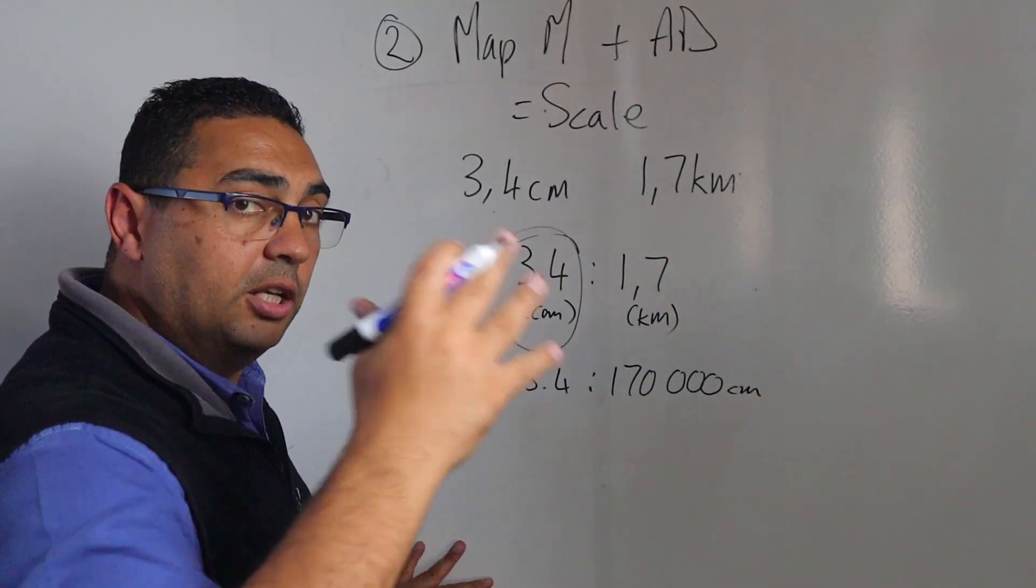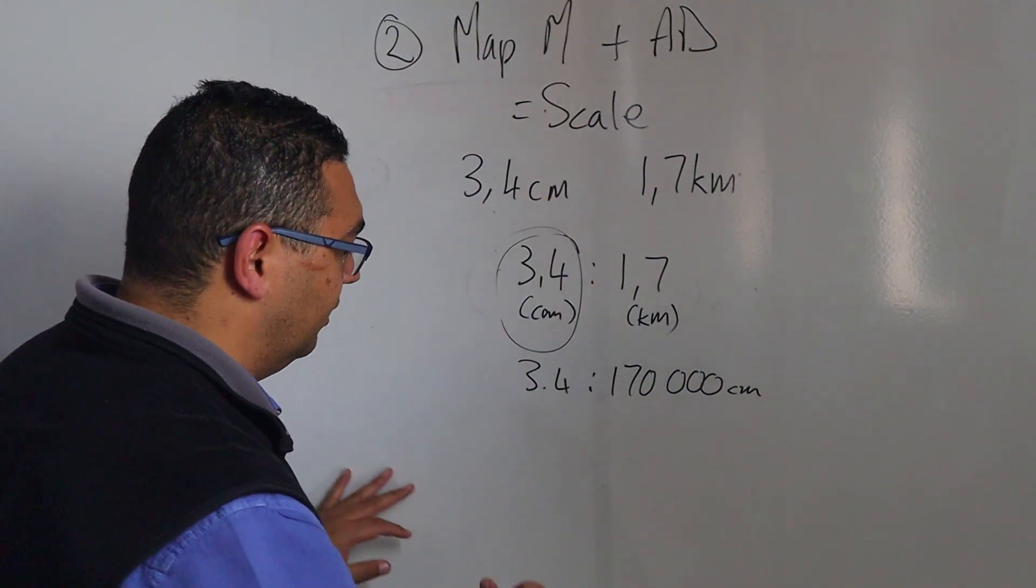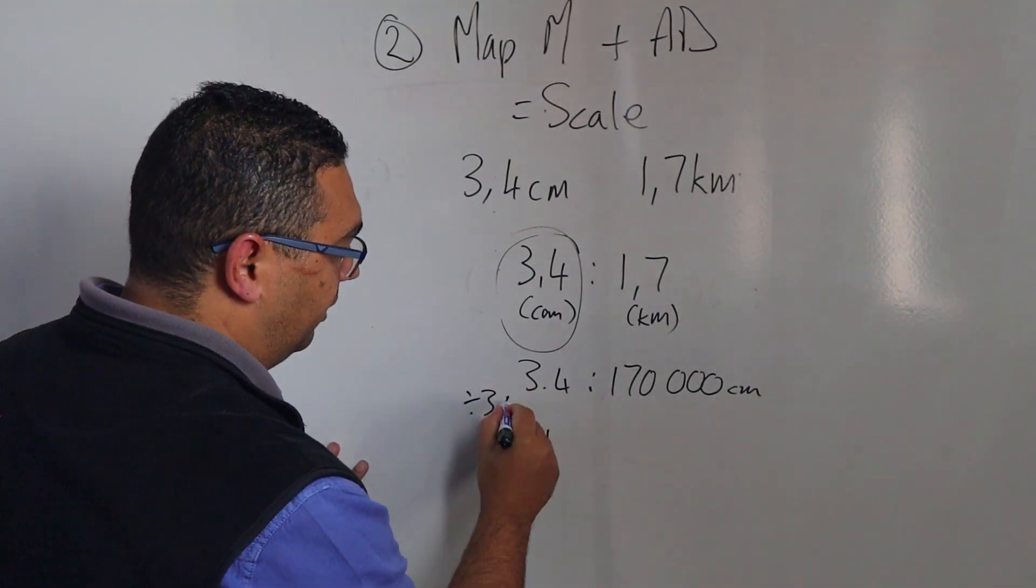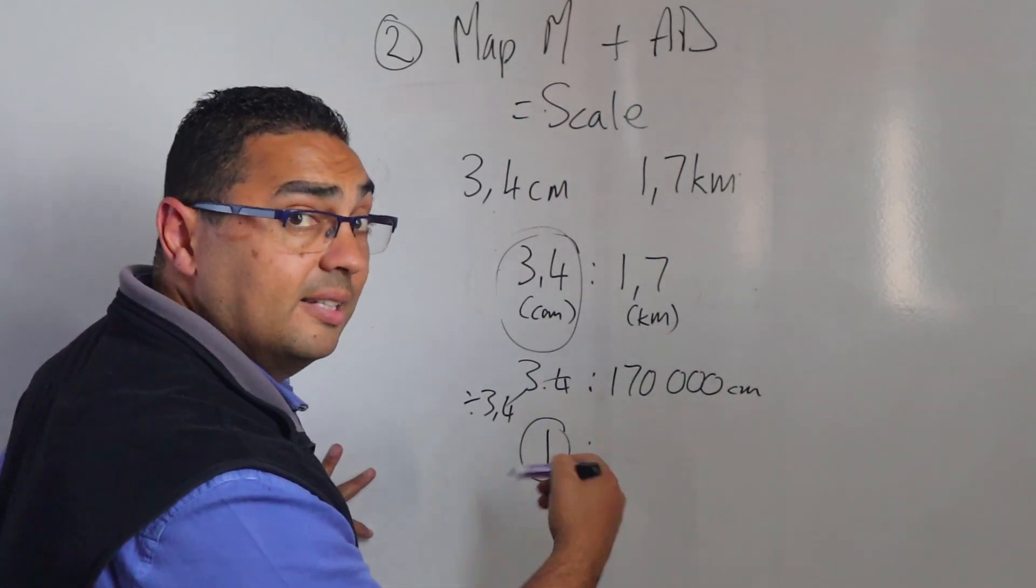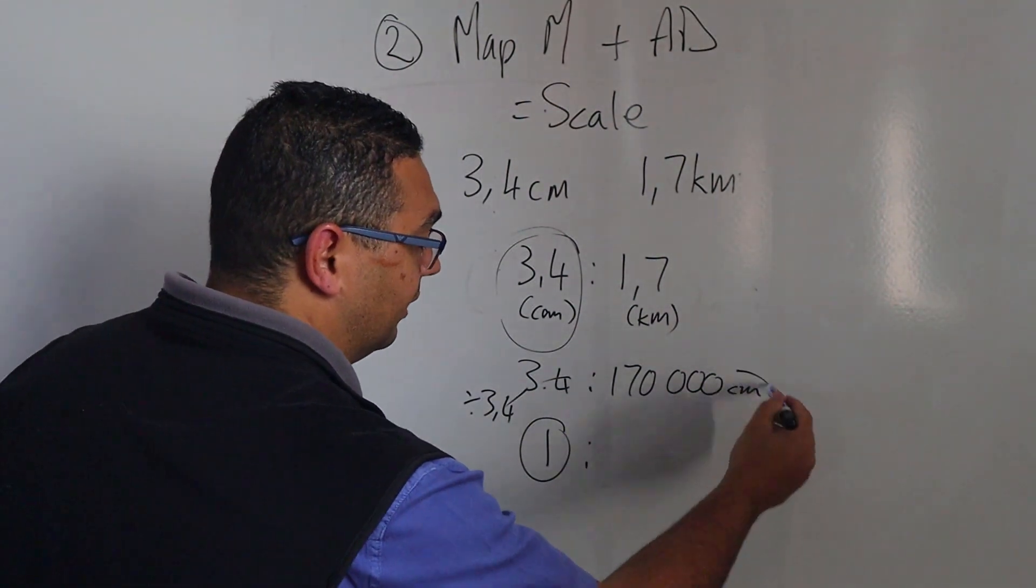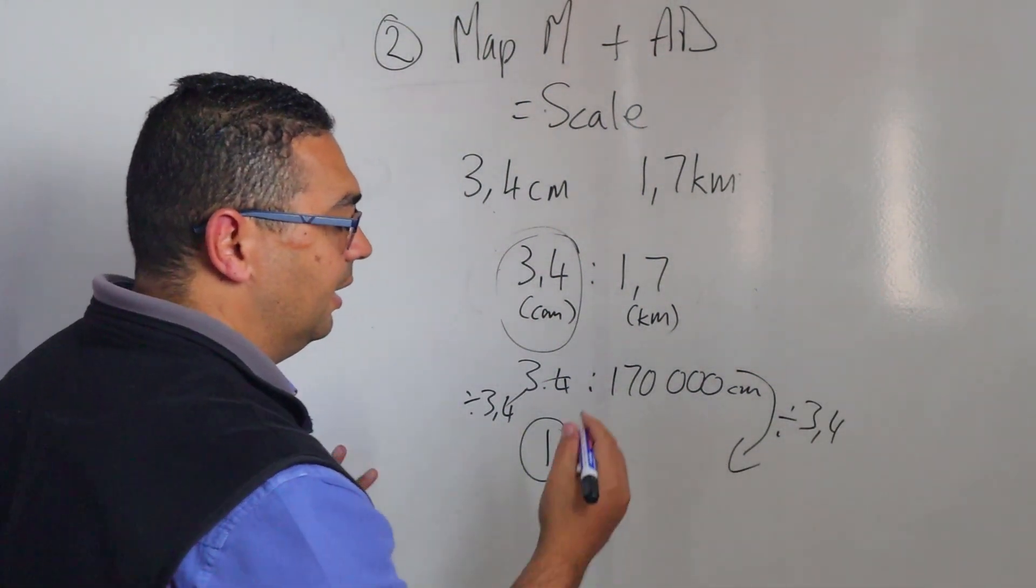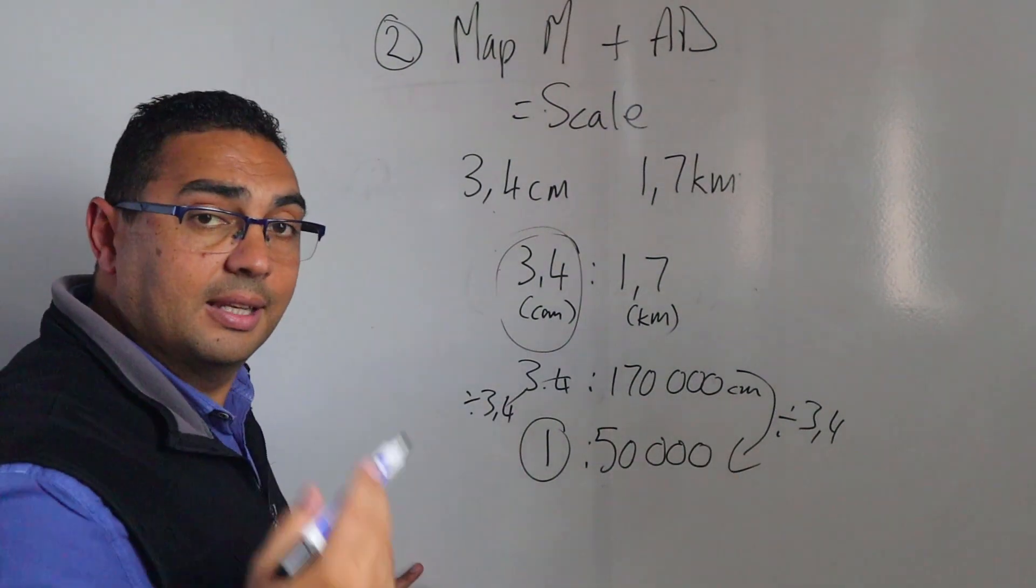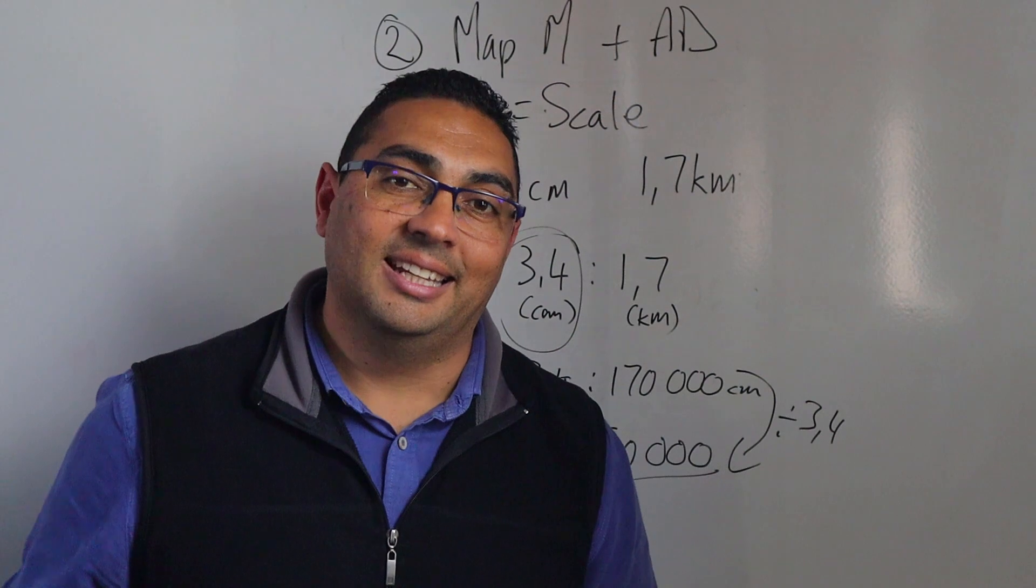Now to get to a scale all the way down I've got to simplify this ratio to 1. So how do I get from 3.4 to 1? I've got to divide by 3.4. That gives me my 1. What I do to the one side I've got to do to the other side. Divide by 3.4 and that should give me 50,000. And there's my scale of 1 is to 50,000.